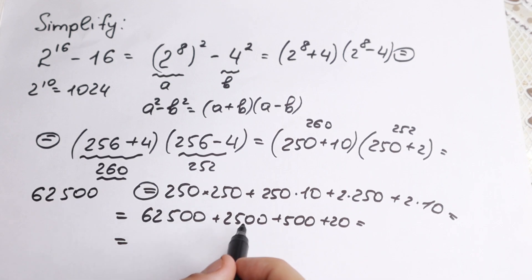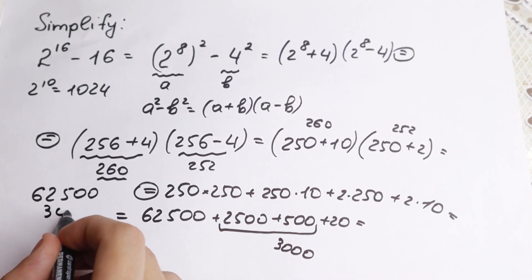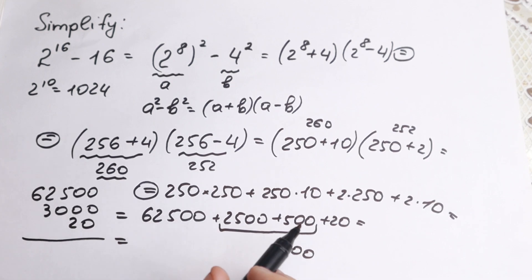Right here, 62,500. Under this, I recommend you to write right here 3000, because 2500 plus 500 equals 3000, and we need to add 20.